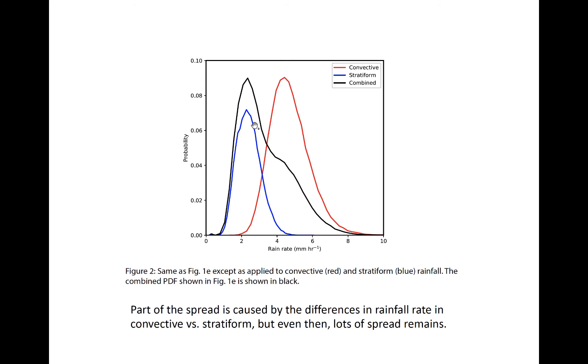So this means that stratiform is probably more common than convective at 30 dBZ, but if you get one of these high rain rates, it's probably a convective 30 dBZ echo. What this also means is that Z-R relationships can be separately computed for convective and stratiform echo to better reduce the uncertainty in an estimate.